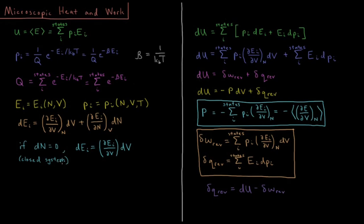For closed systems, the only way to change energy is to exchange it with the surroundings — the energy of the universe is constant, so the surroundings' energy change is equal and opposite to the system's. The primary ways our system exchanges energy are through work and heat. For a reversible process, reversible work plus reversible heat equals the change in internal energy, so dU equals minus P·dV plus dQ reversible.